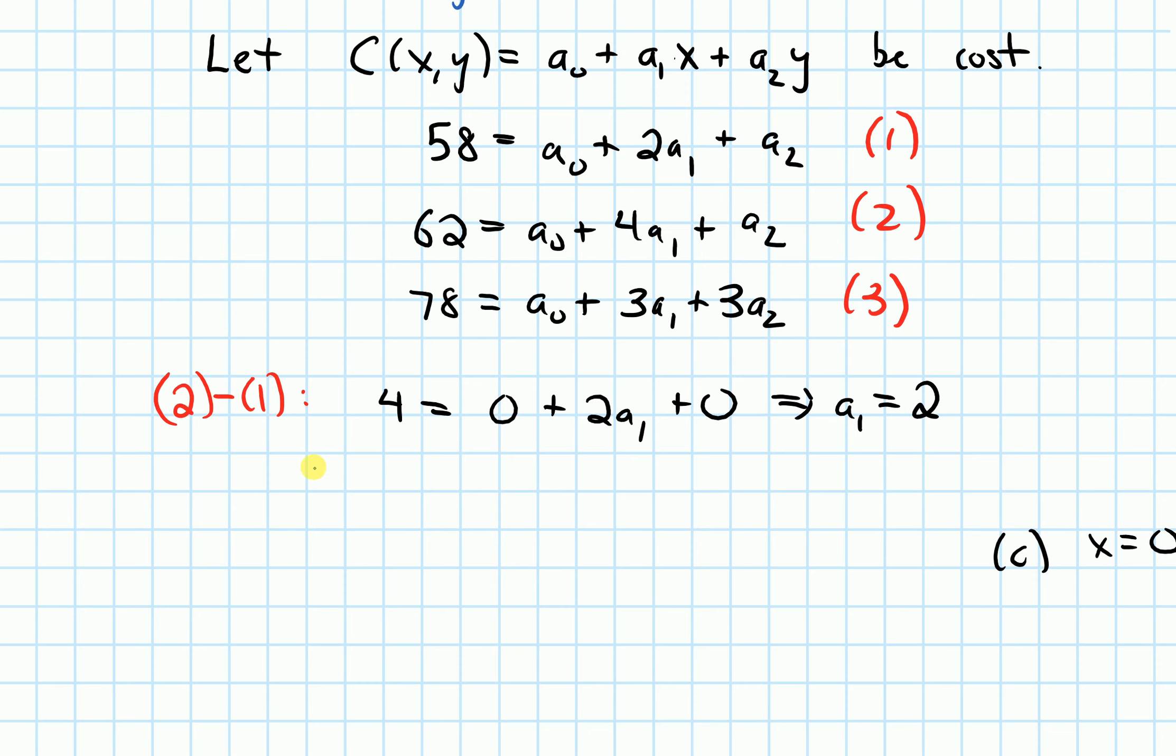So let's take that and let's plug that into the other equations. So let's plug a₁ equals 2 into equation two and equation three. So plugging into the second equation, we get 62 equals a₀ plus 4 times 2, because that's a₁, plus a₂. And if I plug it into the third equation, we get 78 equals, sorry. I had written a₁ here, and this should have been a₀ at the front. So a₀. Okay, and the third equation, we get a₀ plus 3 times a₁ was 2, plus 3a₂.